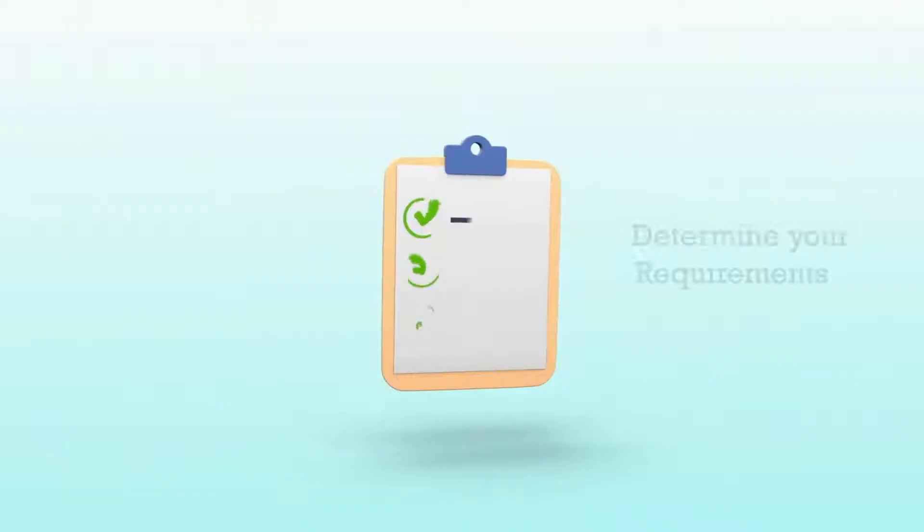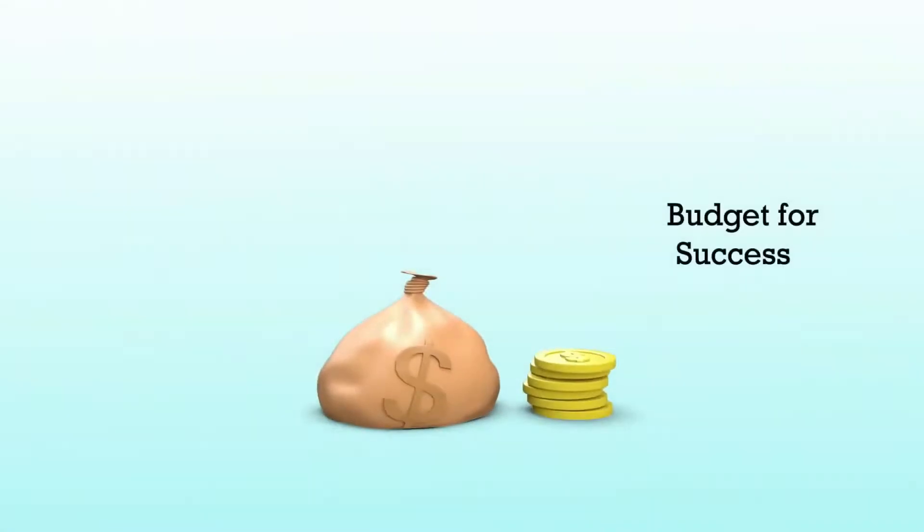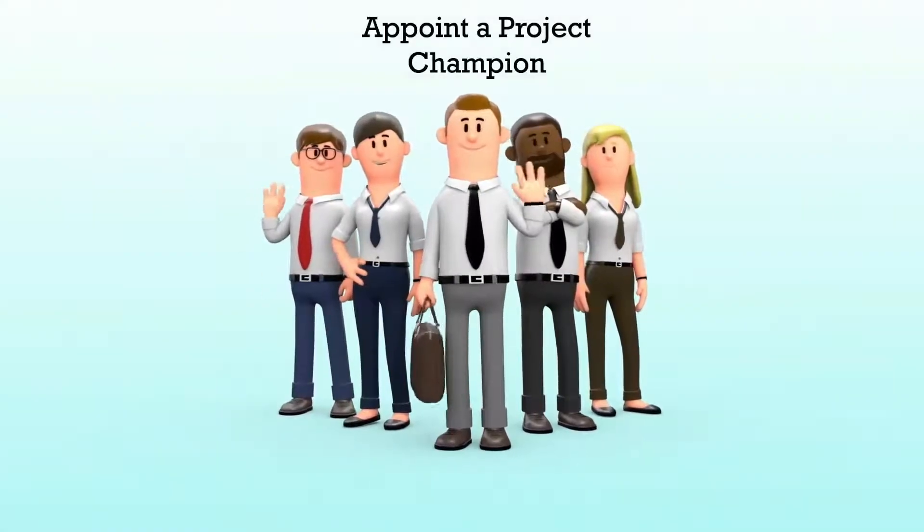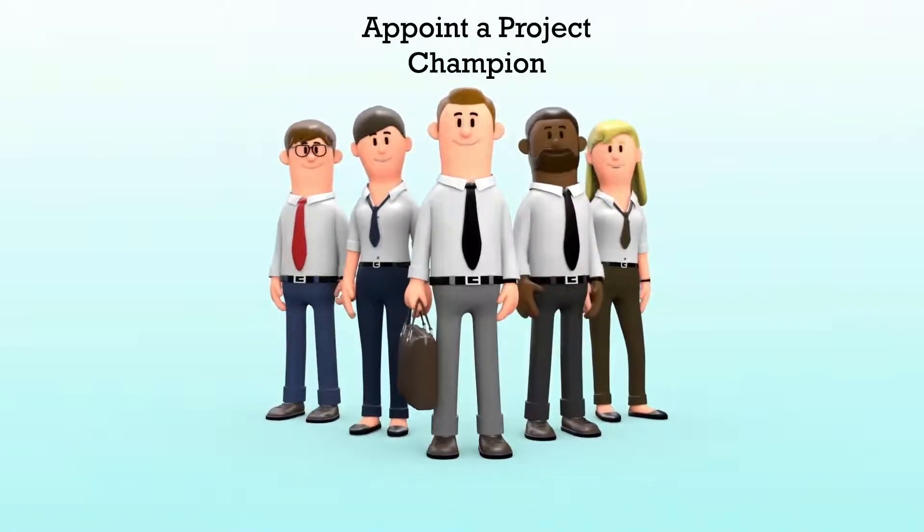Some key steps and elements to consider when evaluating ERP systems include establishing your full requirement set. This means conducting a thorough requirements gathering process so you know exactly what your company needs before you begin looking at what's on the market, keeping your budget in check with proper pre-planning and frequent scope checks, and appointing a project champion or a team of champions to help keep the project on track and manage other stakeholders' expectations.